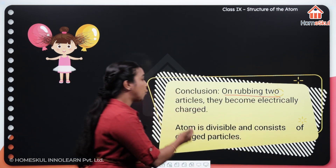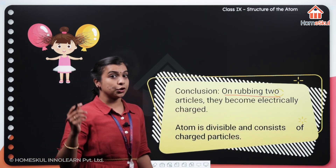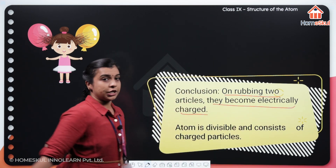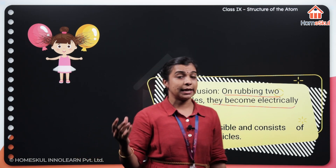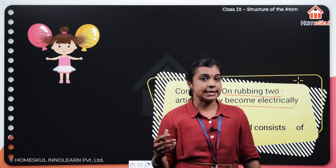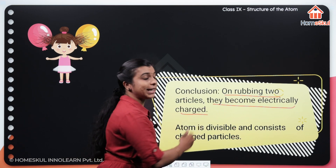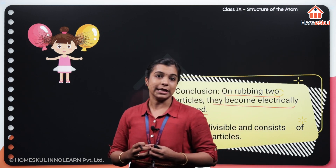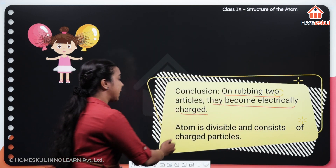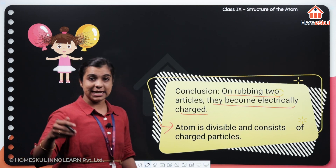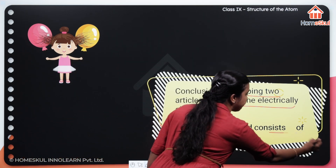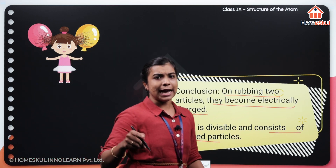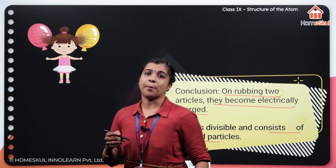On rubbing two articles — what did you use there? You used your comb and your dry hair. They became electrically charged. So, once you are rubbing your dry comb or your dry hair with the comb, you can see that they become electrically charged, so that there are oppositely charged particles that get attracted with each other. Now you can conclude that an atom is divisible and consists of charged particles. So, an atom consists of charged particles — that means an atom contains some subatomic particles.